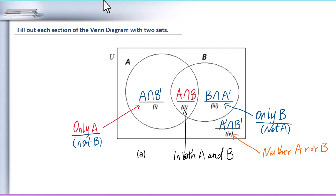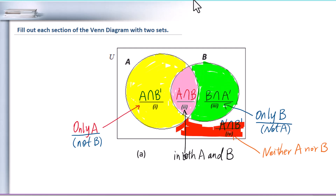Let's color each section. Section 1 means this area, section 2 means this area, and section 3 is this area. Section 4 means the area outside set A and B.